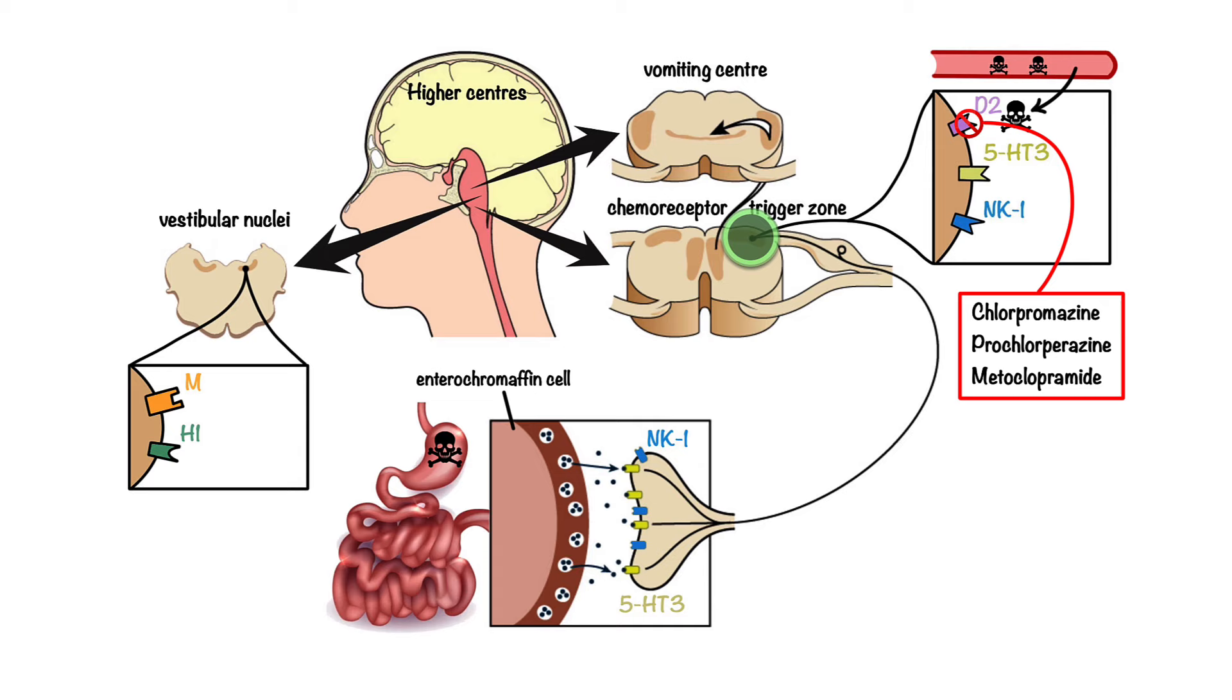This mechanism can be counteracted by medications such as ondansetron, which acts by blocking serotonin type 3 receptors on vagal afferent nerves and chemoreceptor trigger zone, thus inhibiting stimulatory effects of serotonin.